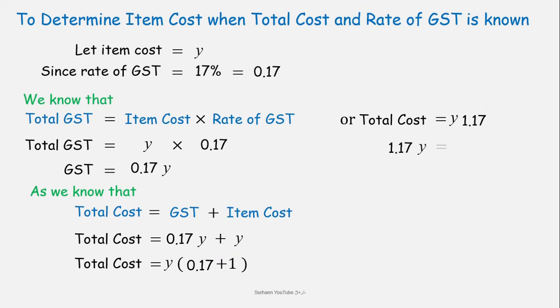By exchanging values, again simplify. 1.17 is multiplied with Y. When we shift it to the other side, it will be divided with the other side value. It will be divided with total cost.